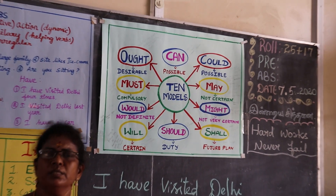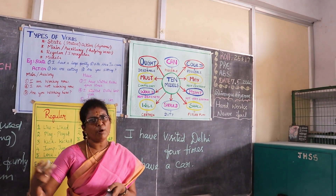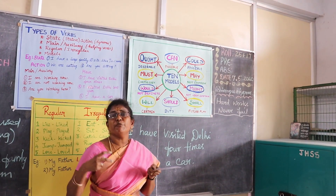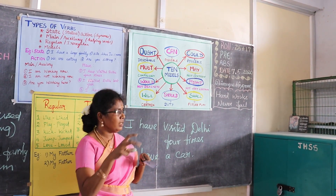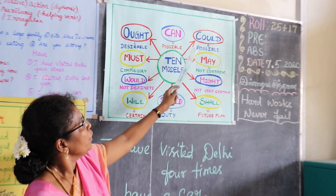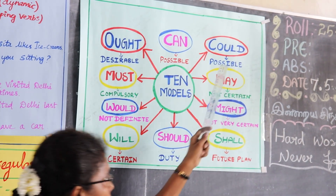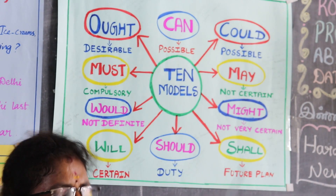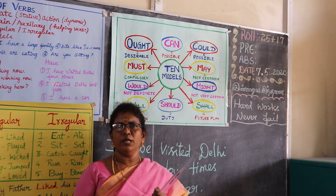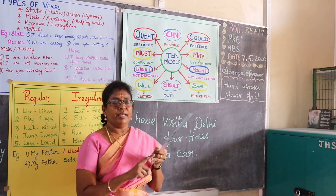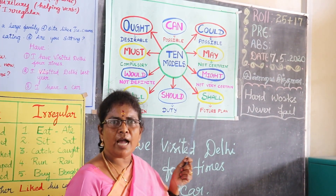For example, 'can' expresses possibility, ability, or a request. Example: 'Can I take a cup of coffee?' — that is a request. 'I can speak five languages' — that shows ability. 'Could' is the past form of can, and it also expresses possibility and polite request. Example: 'I could speak English' and 'Could I talk to Mr. Cannon?'